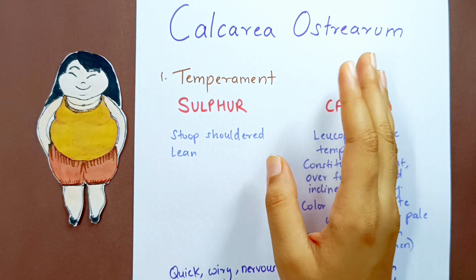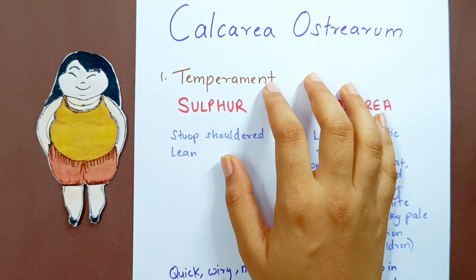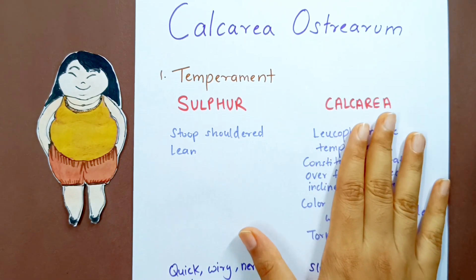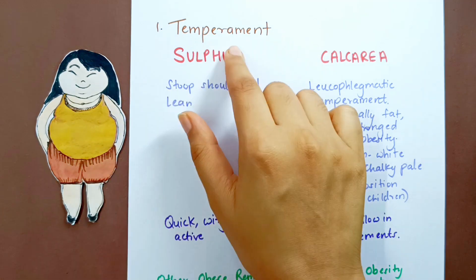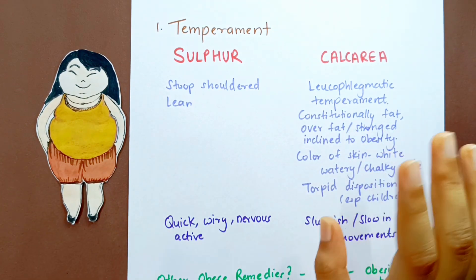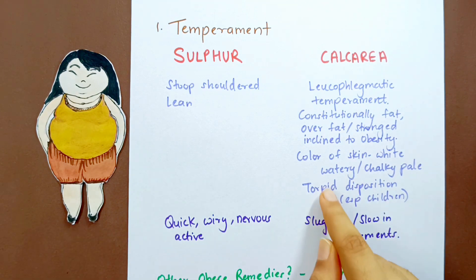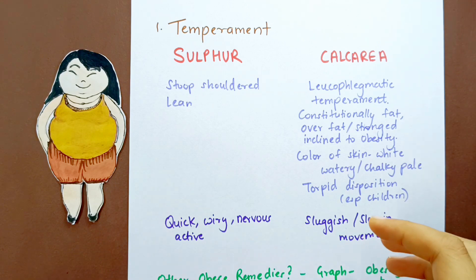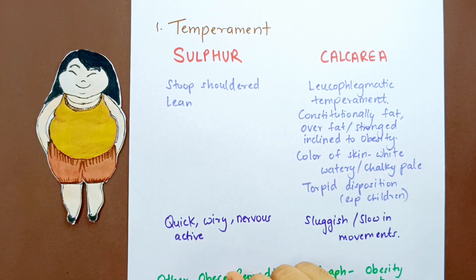Whenever Dr. Nash talks about any remedy, he almost always mentions the temperament, showing its value in studying remedies. Calcarea Carb has a leukophlegmatic temperament — constitutionally fat with a strong inclination to obesity. The skin color is white, chalky, pale, and they have a torpid, sluggish disposition especially in children. This is completely opposite to Sulfur, who are lean, stoop-shouldered, quick, nervous, active, and wiry.